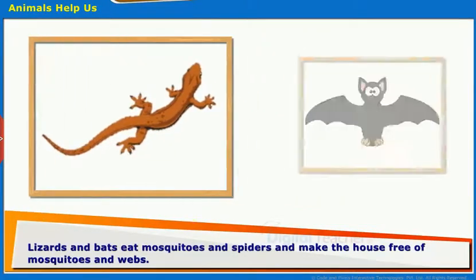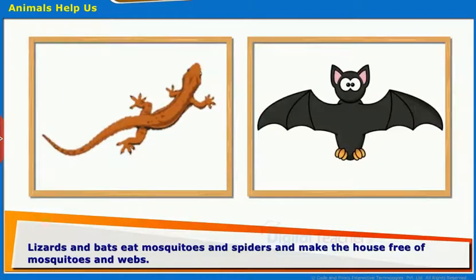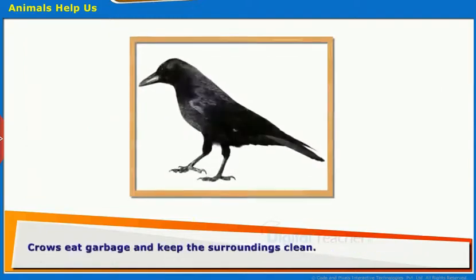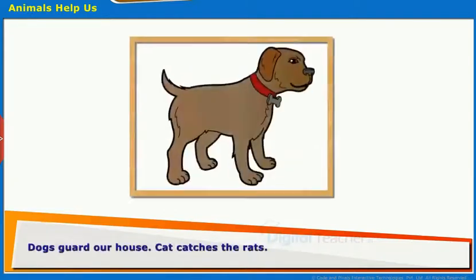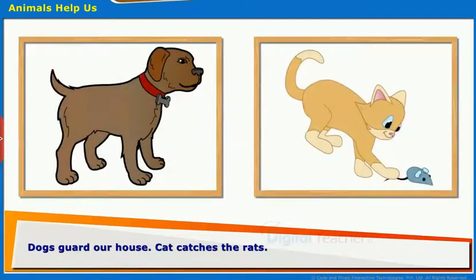Animals help us. Lizards and bats eat mosquitoes and spiders and make the house free of mosquitoes and webs. Crows eat garbage and keep the surroundings clean. Dogs guard our house. Cats catch the rats.